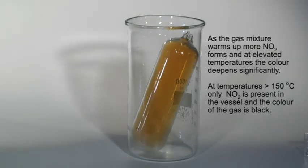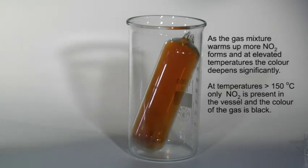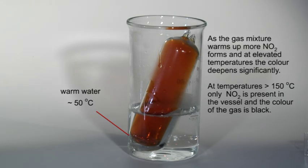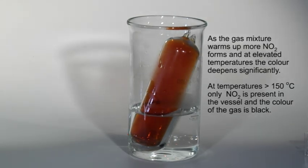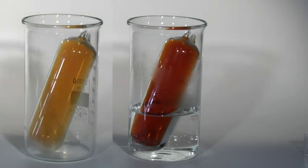The mixture needs to be heated to temperatures in excess of 150 degrees Celsius in order to shift the equilibrium to the extent where effectively only nitrogen dioxide remains. The gas would then appear almost black. To do this in this thin-walled glass vessel would, however, be hazardous.